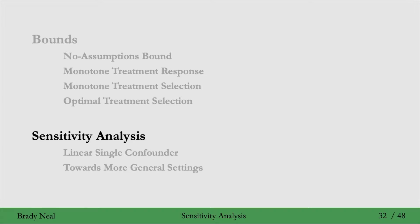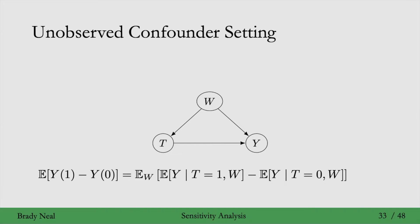That concludes the bounds portion of the lecture, and we can now move on to sensitivity analysis. If we have unconfoundedness — if we have some confounders W that block all backdoor paths or give us conditional exchangeability — then we have that the average treatment effect equals this quantity on the right, the adjustment formula. The unconfoundedness assumption allows us to identify a point for the ATE; we get exactly this point on the right-hand side.